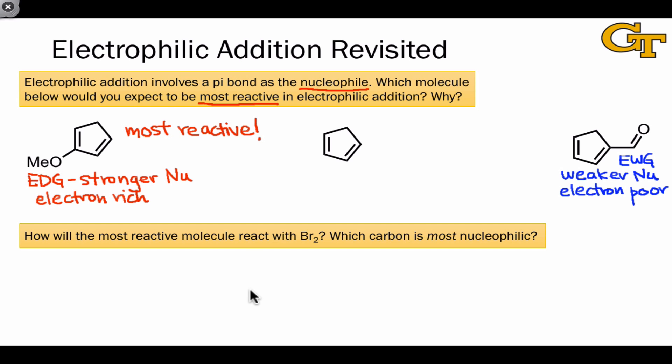We can also use our understanding to predict which carbon within the most reactive molecule is specifically the most nucleophilic. And this just requires consideration of resonance forms. Pushing electrons starting from the electron donating group reveals that this carbon where we're landing electrons is probably the most electron-rich carbon within the structure as a whole.